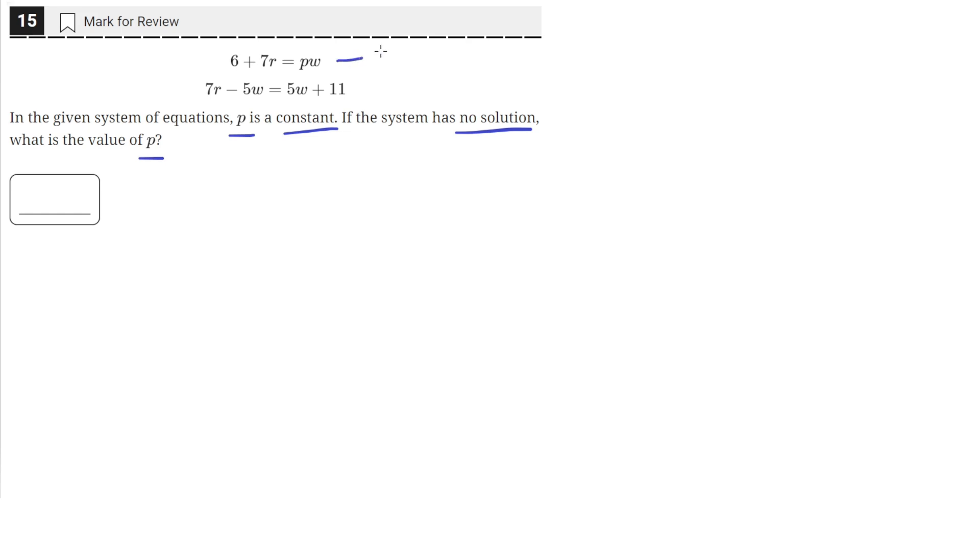So we're given these two equations, equation one and equation two, and we need to find a value of p such that the system of equations has no solution.